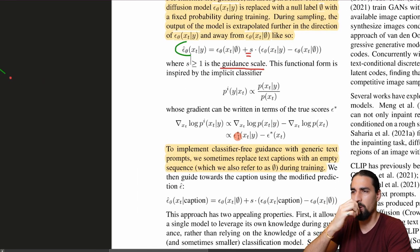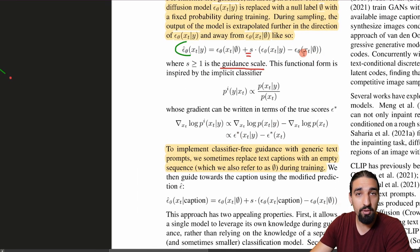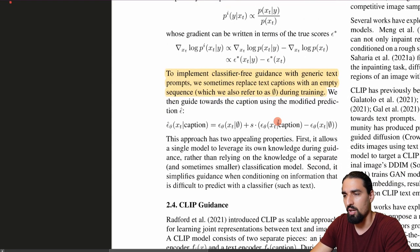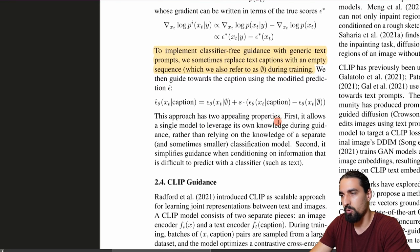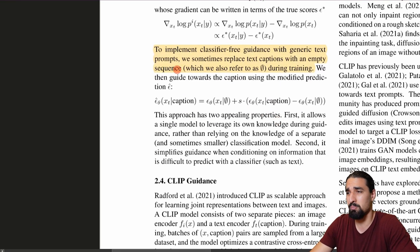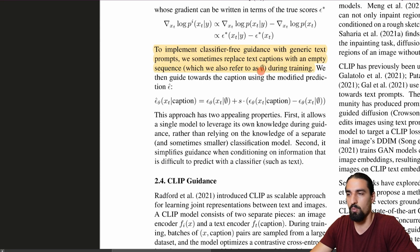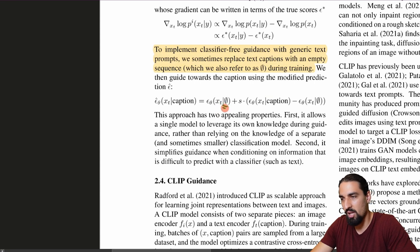Now let's see how we can replace the simple labels with natural language, because that's what we care about in GLIDE. To implement classifier-free guidance with generic text prompts, they sometimes replace text captions with an empty sequence during training. Then they guide towards the caption using the modified prediction. Everything remains the same, except that we are now conditioning on a caption and not on a simple label. That's pretty much it.